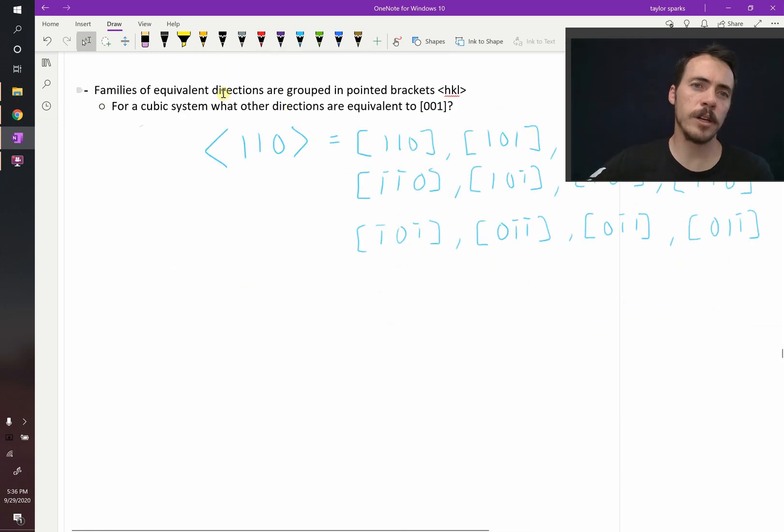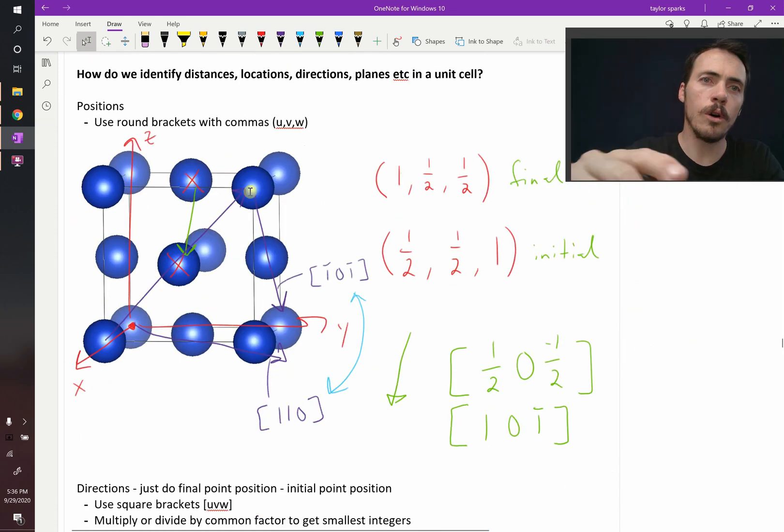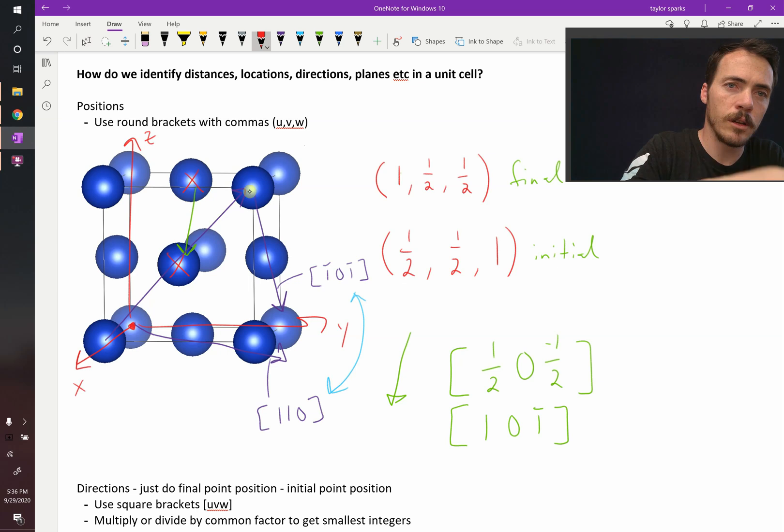So how about in a cubic system? What other directions are equivalent to the 1, 0, 0, 0, 1? So what is the 0, 0, 1 direction? Could you draw it here? The 0, 0, 1 direction would be, well, it would be the one that travels nothing in the x, nothing in the y, but 1 in the z. So it's going to be the one that goes straight up here. That would be the 0, 0, 1 direction.